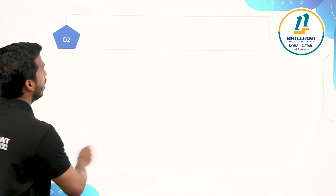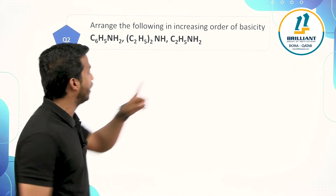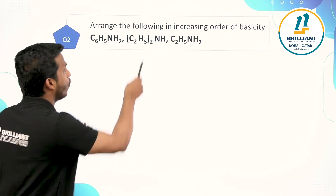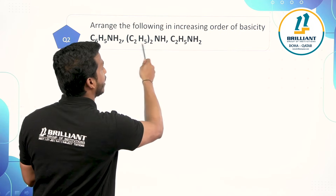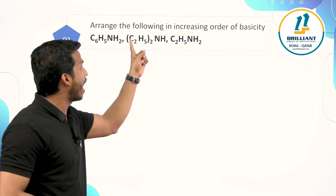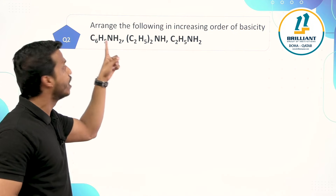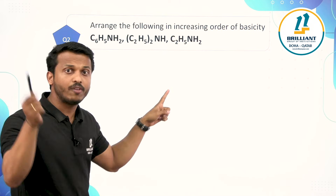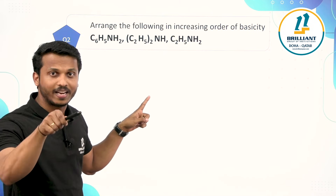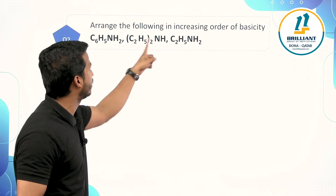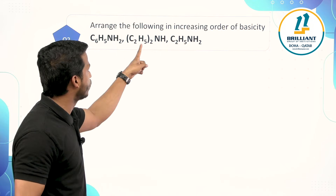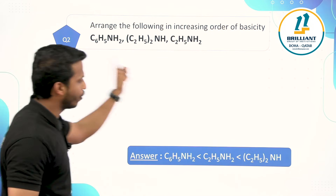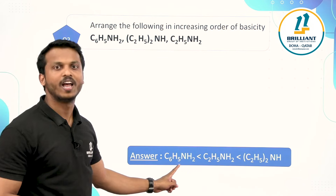Question 2: Arrange the following in increasing order of basicity. C6H5NH2 is aniline — an aromatic amine. The other two are aliphatic amines with ethyl groups. Aliphatic amines are more basic than aromatic, so aniline is least basic. With ethyl group, the order among aliphatic amines is: secondary > tertiary > primary. So the full order from least to most basic is: aniline (aromatic) < primary < tertiary < secondary.